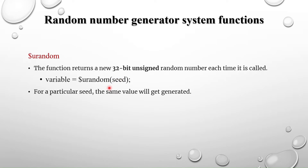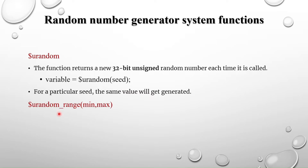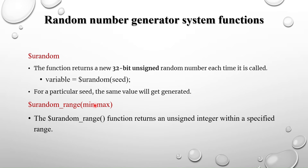The syntax is $urandom with an optional seed argument. If you provide a seed value, the same random value will be generated each time that seed is used — this allows you to track and reproduce random values. Similarly, $urandom_range works like $urandom but accepts a minimum and maximum range argument. For example, $urandom_range(3, 5) generates random values between 3 and 5.